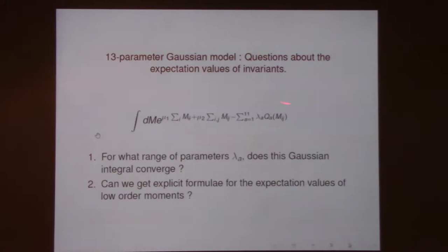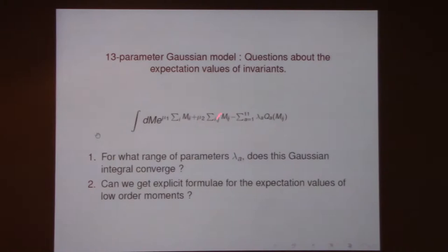So we understand the counting: there are two linear parameters and 11 quadratic parameters. What we would like to do, as a statistician might say, is take this Gaussian measure, this P(M). First question: here's this 11-parameter space — when does this converge? When does this Gaussian integral converge? And can we use this 13-parameter model to get expectation values of quadratic and cubic invariants?